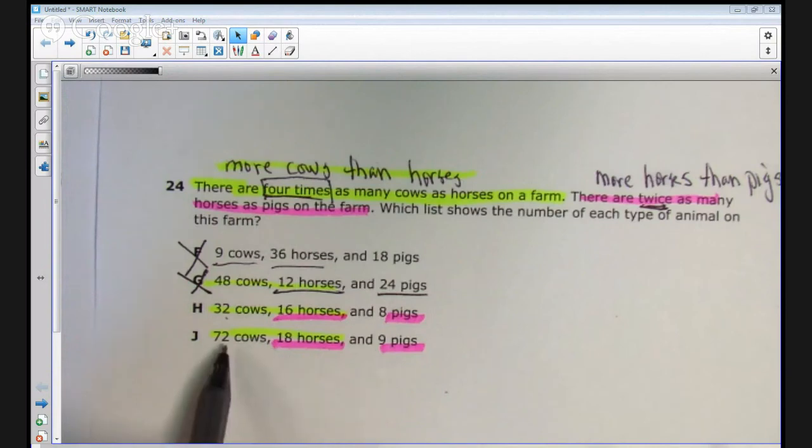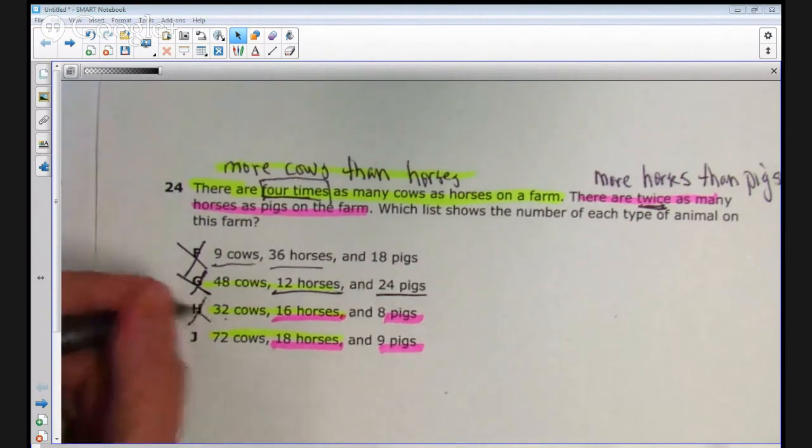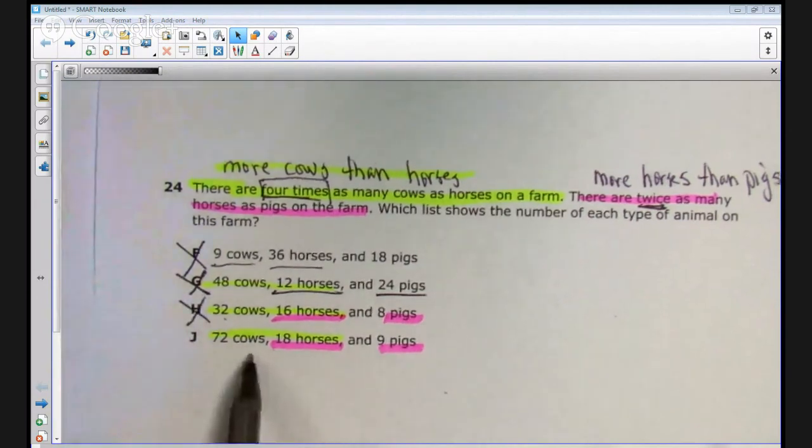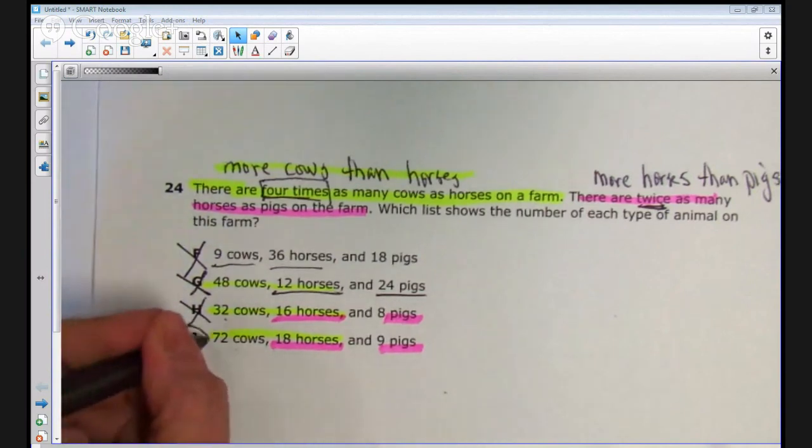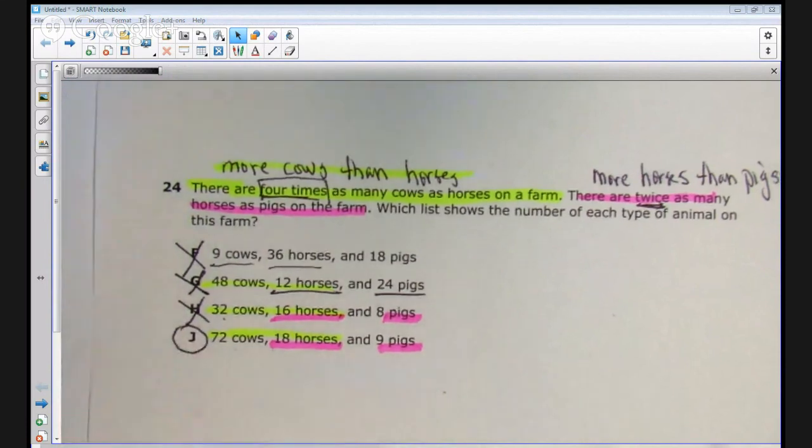But even if your student struggled with the multiplication or division, however they wanted to work it, they would have already eliminated answer choice H. So it shouldn't be necessary for them to do the division or multiplication to arrive at answer choice J. The correct answer to the question is answer choice J.